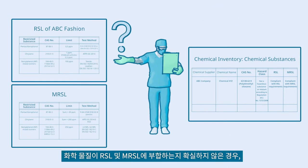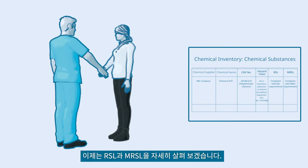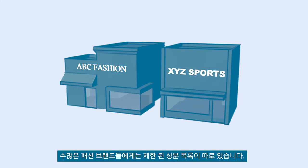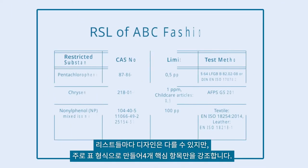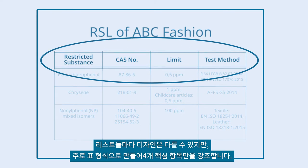If you are unsure whether the chemicals conform to the RSL and MRSL, request a written conformity declaration from the chemical supplier. Many fashion brands have their own Restricted Substance List. No matter how different the design of these lists is, they usually show four key items in a table format.